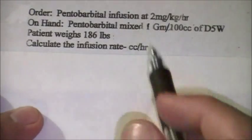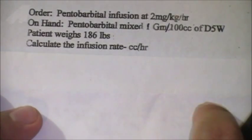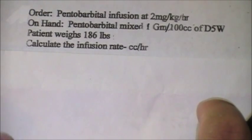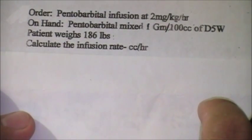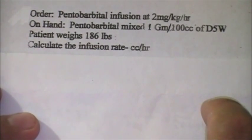Again we have an order for a pentobarbital infusion at 2 mg per kg per hour. On hand we have pentobarbital mixed 1 gram in 100 ml of D5W, and our patient weighs 186 pounds. The problem is asking us to solve for ml per hour.